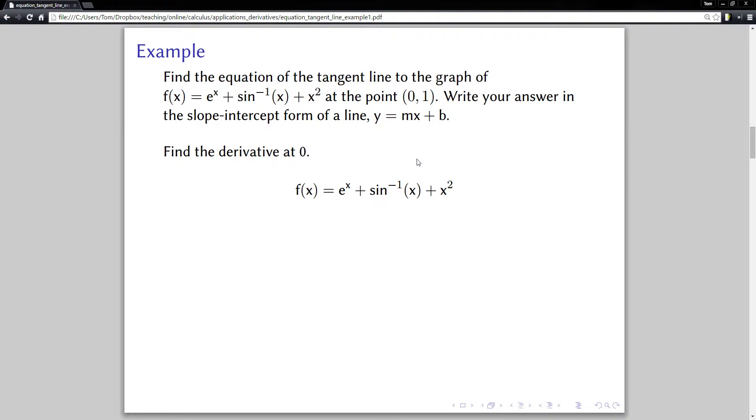So that's the original function, and we take the derivative of that. This is just the sum of three functions. So the derivative would just be e^x + 1/√(1-x^2), which is the derivative of sine inverse, plus the derivative of x^2, which is 2x.